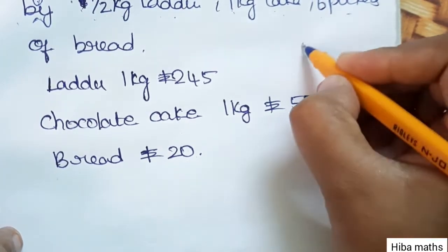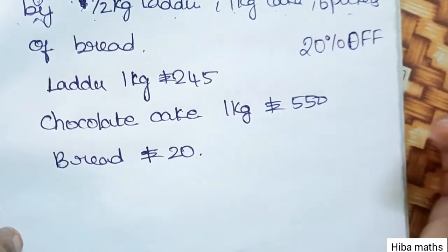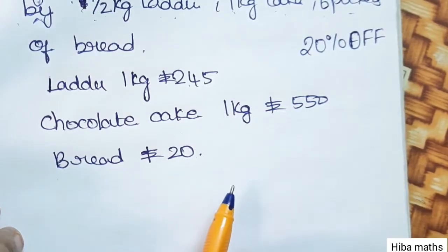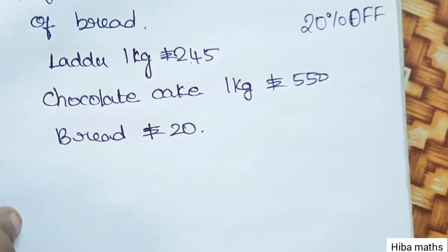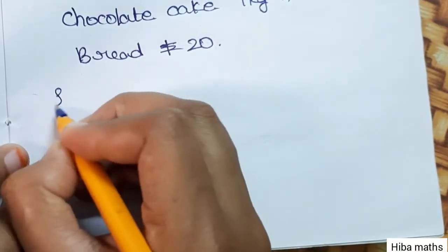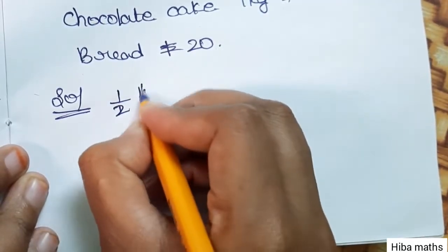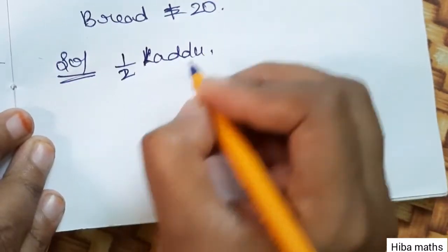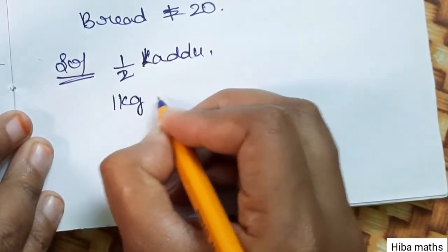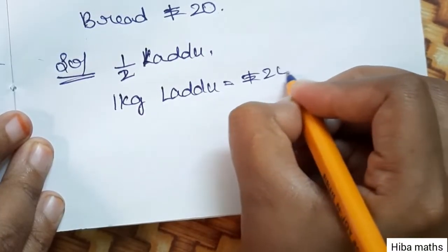Now, the offer is 20% off. We need to find the price of half kg laddu, 1 kg cake, and 6 pockets of bread. For half kg laddu, first we know 1 kg laddu is Rs.245.